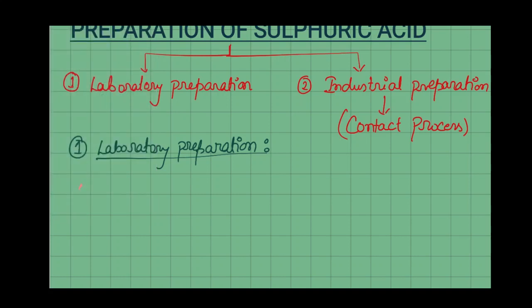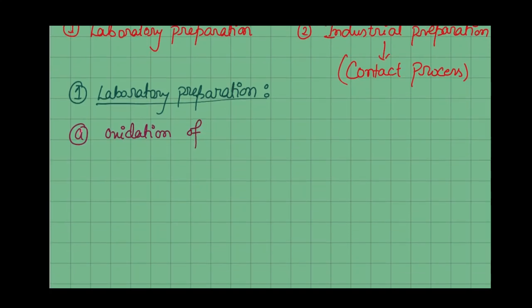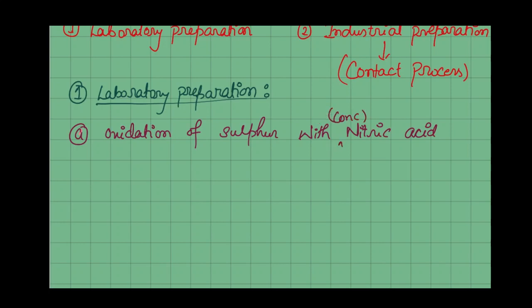The first method is the oxidation of sulfur. We carry out the oxidation of sulfur with nitric acid — specifically concentrated nitric acid.